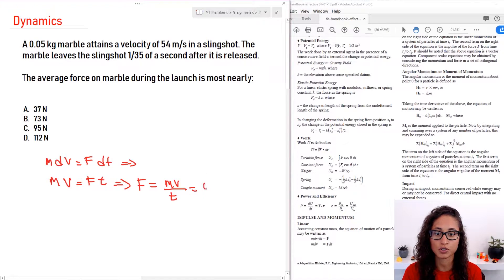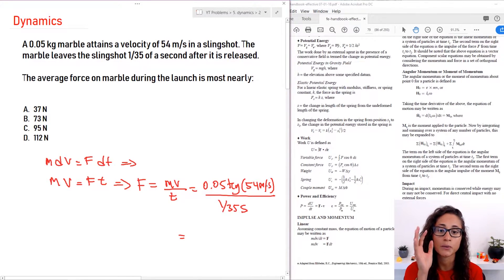So m is equal to 0.05 kilograms. Velocity is 54 meters per second, and then over 1 over 35 seconds. Note, guys, here that the units exactly add up to newtons, because I have kilograms meters per second squared, because this is second times second, that's second squared.